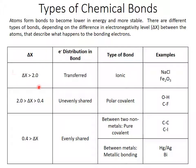If your delta chi — your electronegativity difference — is greater than 2, that's a really large gap, so those electrons are going to be transferred outright and you're going to ionize your two atoms. This becomes an ionic bond, which is held together by electrostatic attraction. Examples of this are sodium chloride and iron 3 oxide.